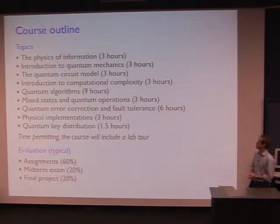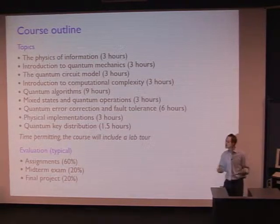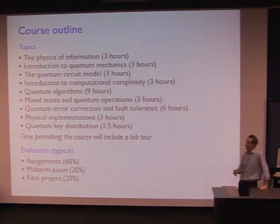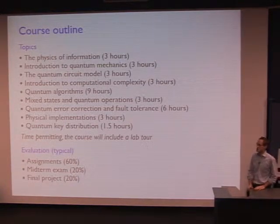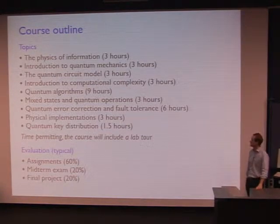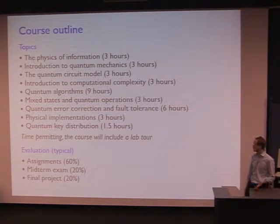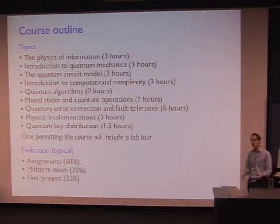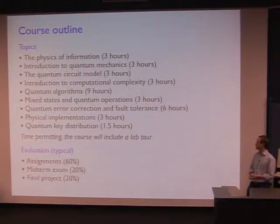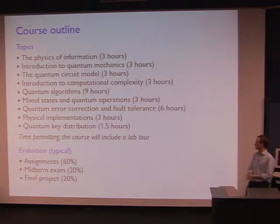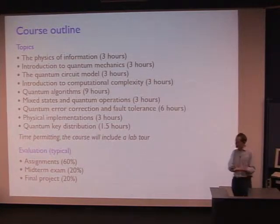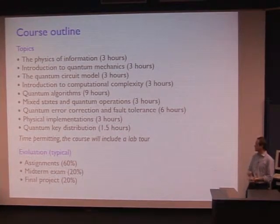Here's a rough outline of what we'll talk about in the course. We'll set up this model of quantum information and talk about how you can build quantum computers — how you can build computers out of quantum mechanical components. We spend most of the course talking about quantum algorithms, so talking about problems you can solve fast with quantum computers. We also talk a bit about error correction — how you can correct errors that crop up in quantum computers — and a little bit about how you can actually build quantum computers, which is very much a topic of active research, especially here at Waterloo. And at the end, maybe time permitting, we'll talk about some additional topics.